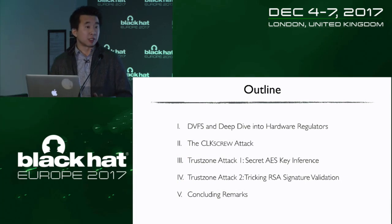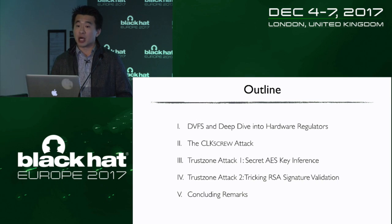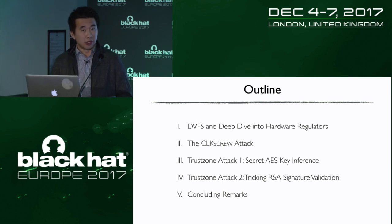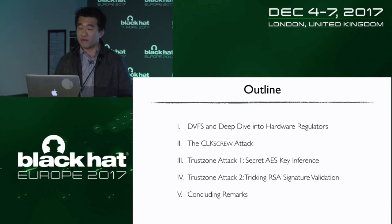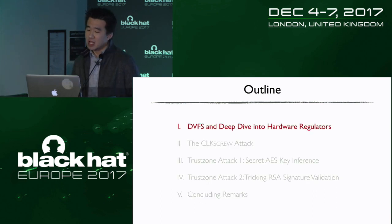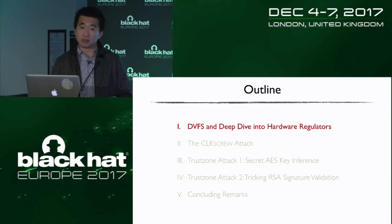In summary: we found a new software-based attack vector that exploits a mechanism found in almost all systems. We show this vector can break TrustZone's security guarantees. We disclosed our findings to vendors whose chips are in hundreds of millions of devices, and they accepted our disclosure as highly critical and novel and are working towards mitigation. Today we'll cover DVFS hardware and software support, the general attack architecture, and two TrustZone attacks on an actual phone.